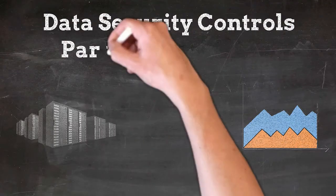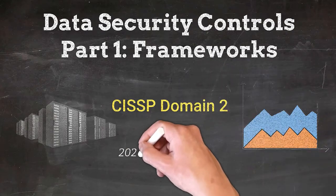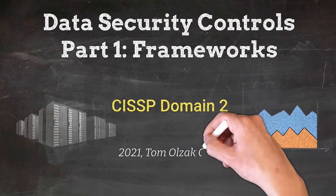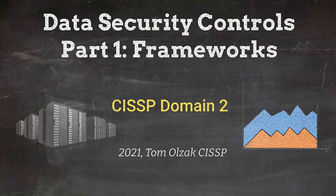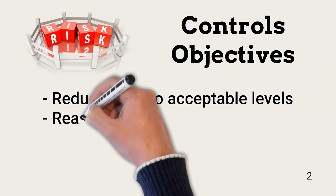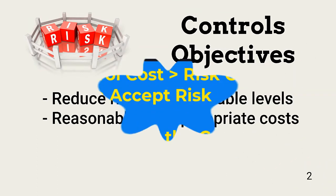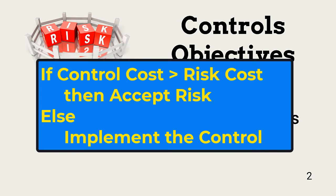In this lesson, we begin looking at data security controls by exploring the various security frameworks available and how to use them. An organization should use controls to reduce and manage risk at reasonable levels acceptable to management. This includes ensuring the costs of the controls do not exceed the cost of the risks.